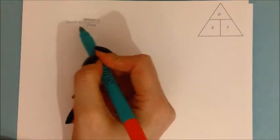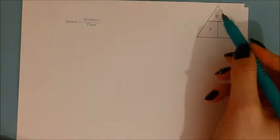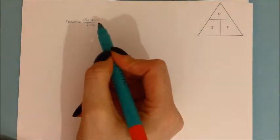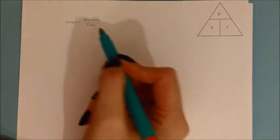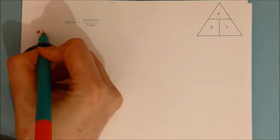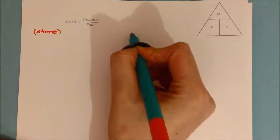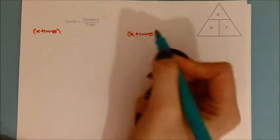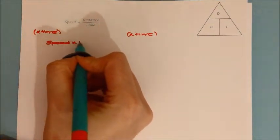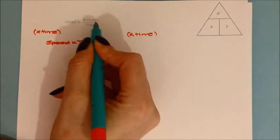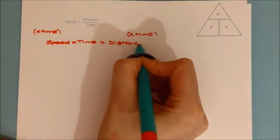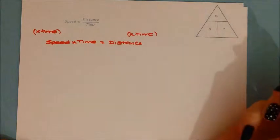Speed is equal to distance divided by time. If I wanted to rearrange this to get distance on its own: distance divided by time is speed, so the opposite of dividing by time is multiplying by time. If I multiply both sides by time, that cancels out, leaving speed times time on one side, equal to distance on the other. So speed times time equals distance.